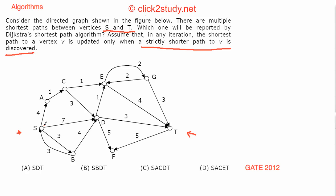We start with S. Vertices I've finalized get a red circle; current distances are shown in blue. S is at distance 0. From S we can reach A at distance 4, D at distance 7, and B at distance 3. Out of these, B has the shortest distance, so B is finalized first.